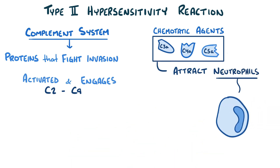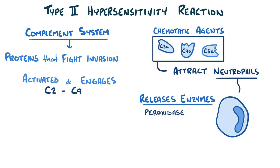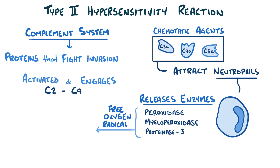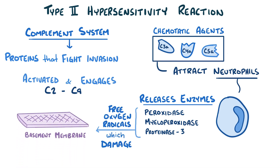Once neutrophils join the party, they dump a bunch of enzymes like peroxidase, myeloperoxidase, and proteinase-3, which all cause free oxygen radicals to form, which damage the basement membrane as well as the nearby endothelium and the underlying organ itself.